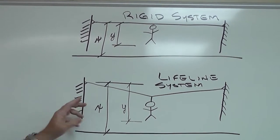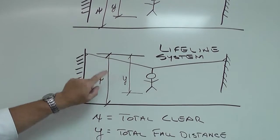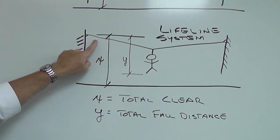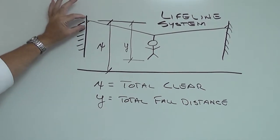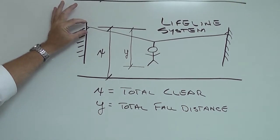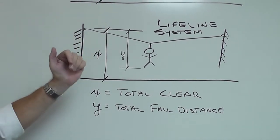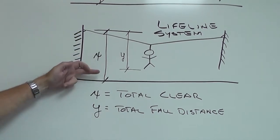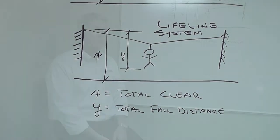In a lifeline system there's absorption through the connection points, there's absorption through the length of the cable, there's absorption because there's typically some type of an external shock absorber involved which allows more slack for the cable, which all adds to the overall fall distance.